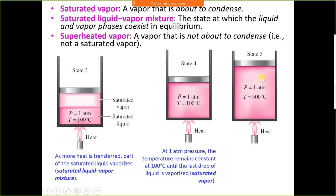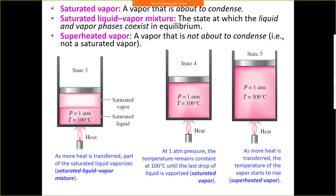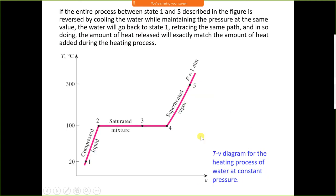The maximum temperature that can be achieved is 374°C. If the pressure is raised to 221 bar and temperature raised to 374°C, then water directly converts into vapour without boiling — we will see that part in a later case. The subcooled liquid at 20°C is converted into saturated liquid by supplying sensible heat, which raises the temperature from 20°C to 100°C.